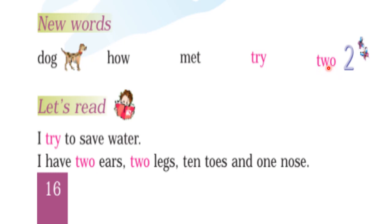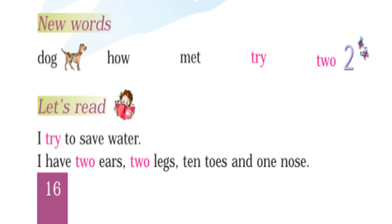Now let's read: I try to save water. I have two ears, two legs, ten toes, and one nose. Children, I hope you have understood this. Now let's move further.